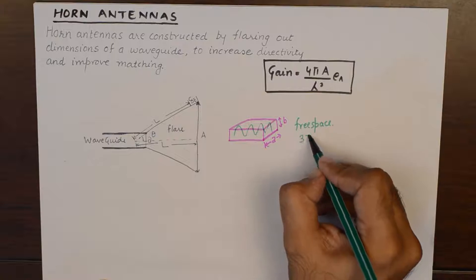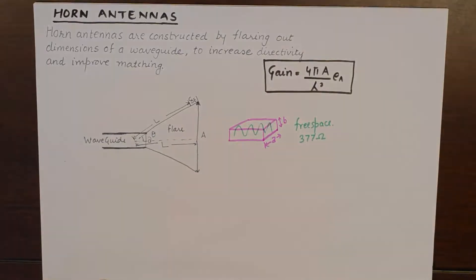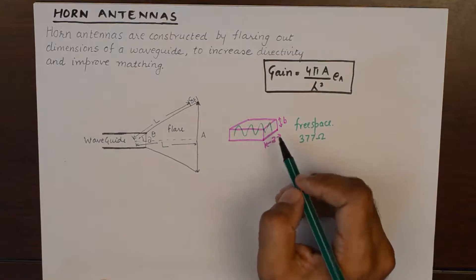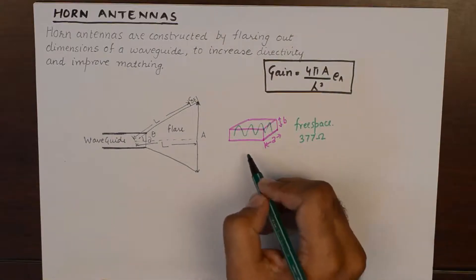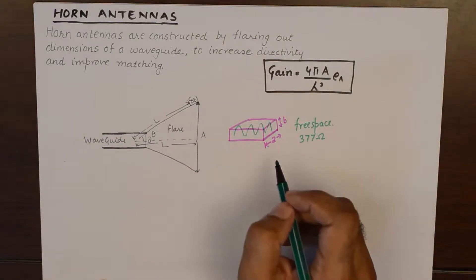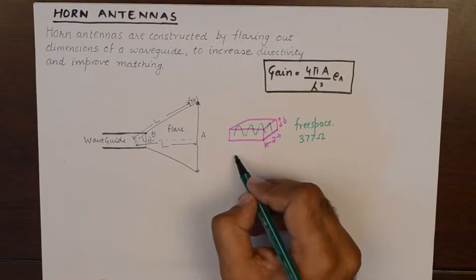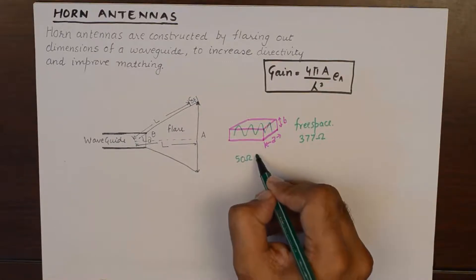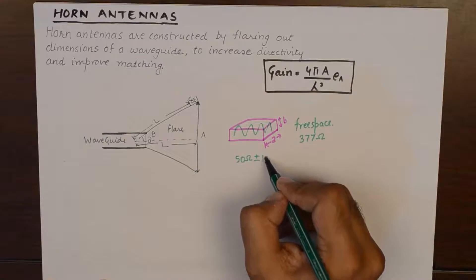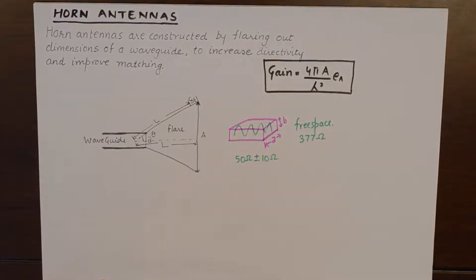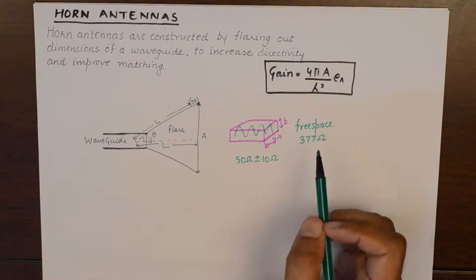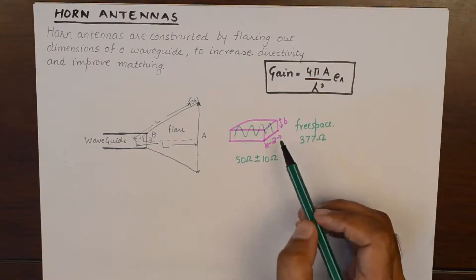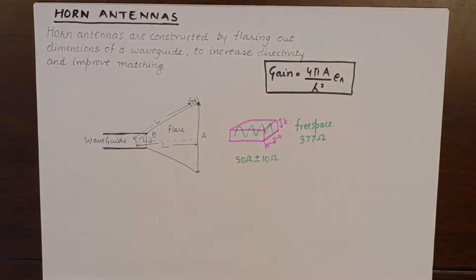The impedance of free space is 377 ohm which is fixed. And most of the waveguides because of the virtue of their dimensions have intrinsic impedance of around 50 ohms plus minus 10. So there is a huge mismatch of impedances when we talk about the signal going out straight from a waveguide into free space.